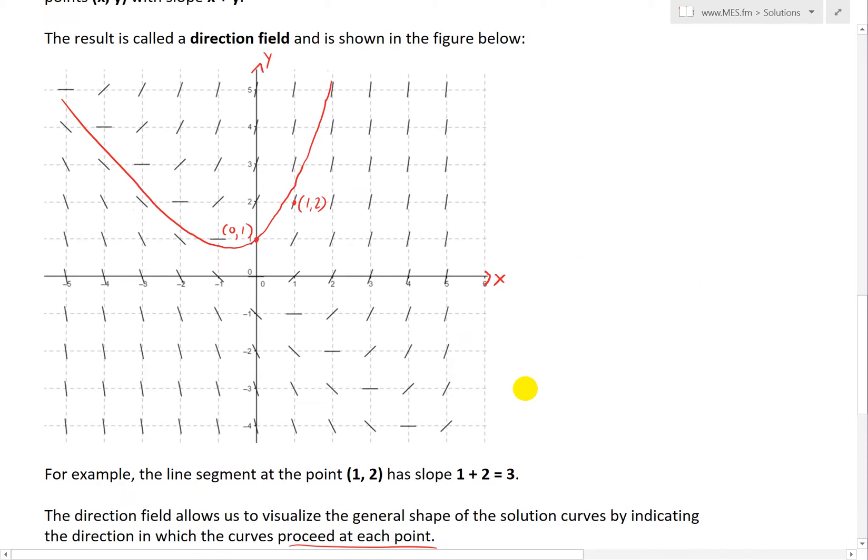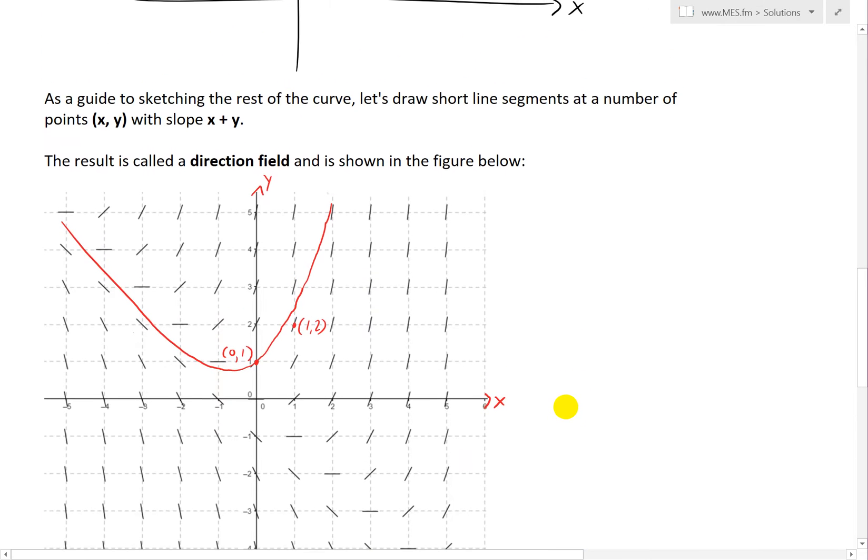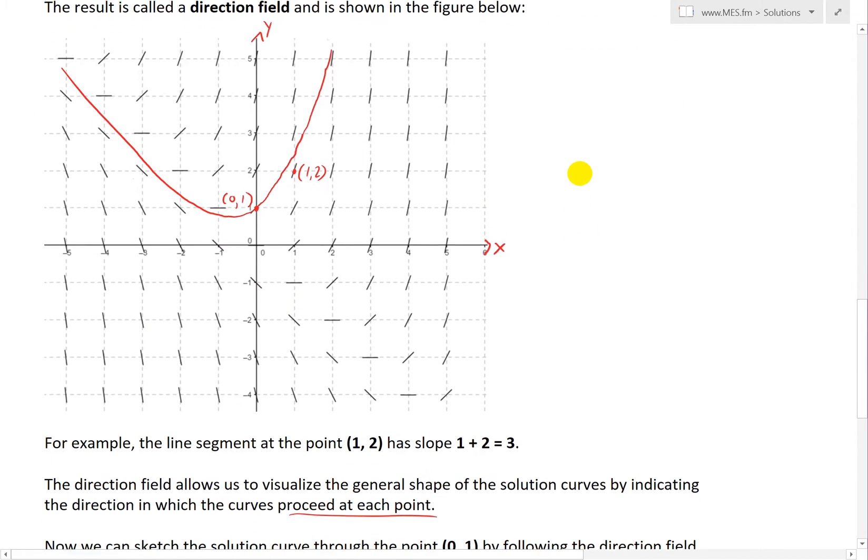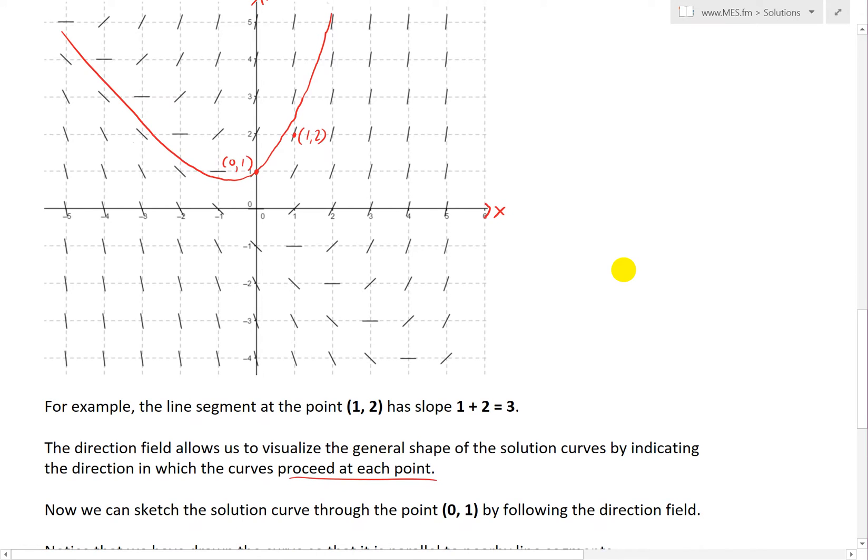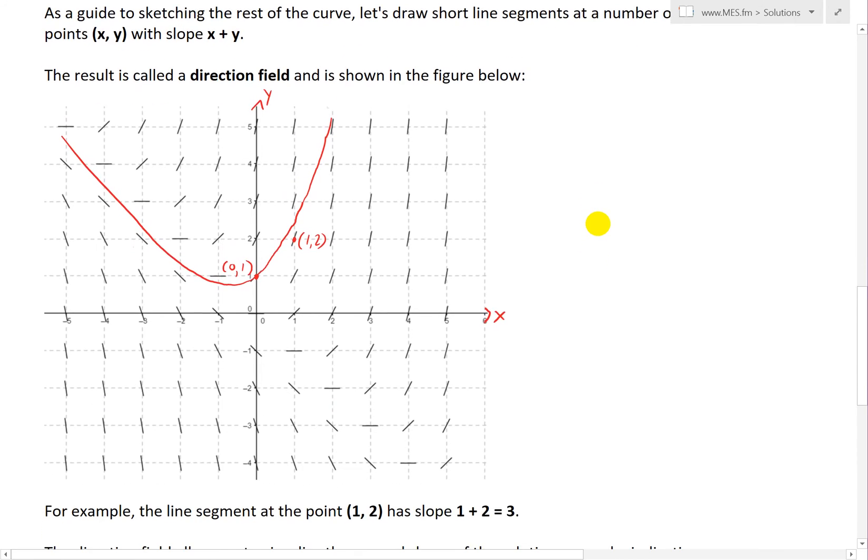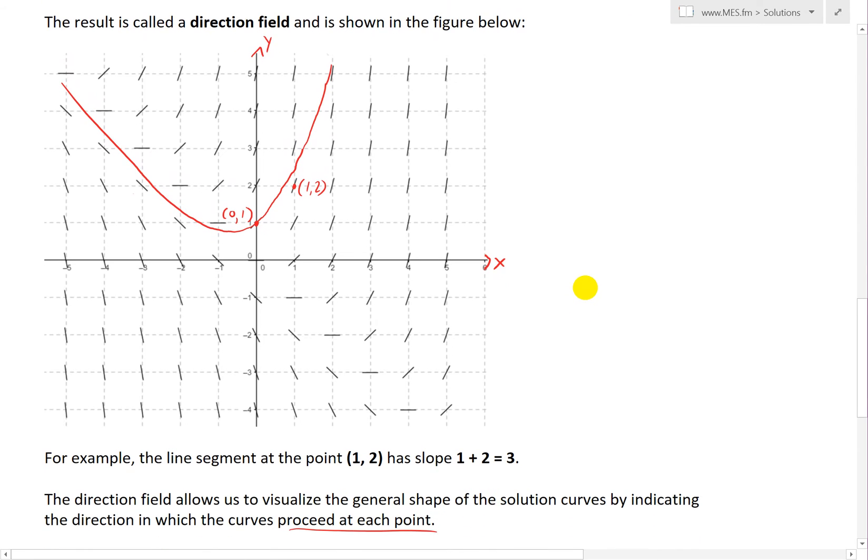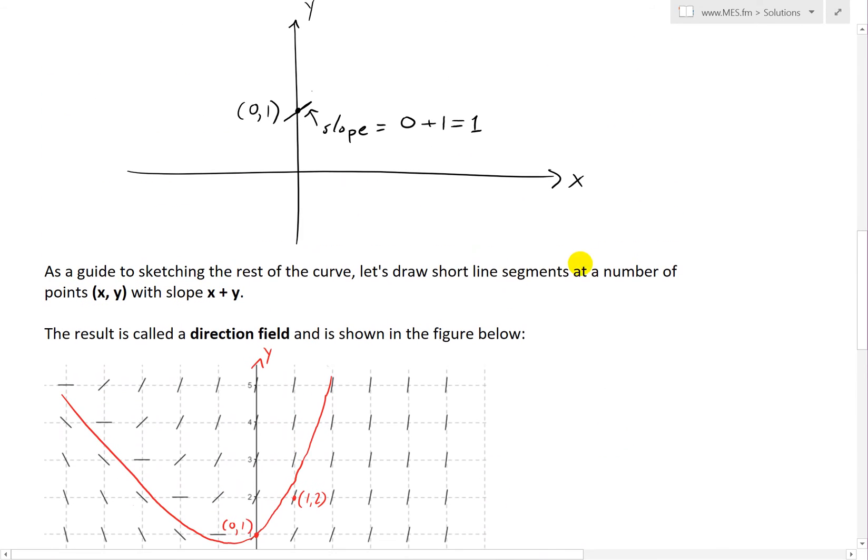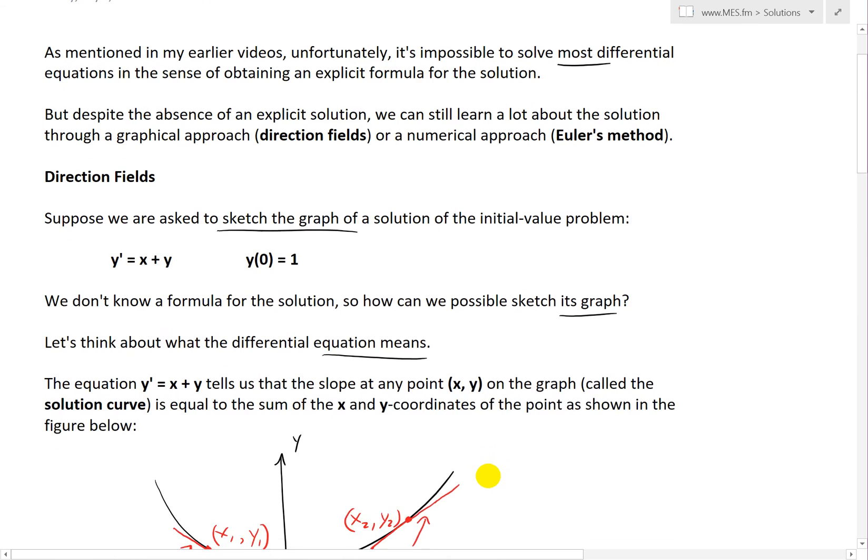This direction field is generated by the computer because it's quicker. This will foreshadow later videos that will show that most of the world's supercomputers are actually used to solve differential equations numerically or graphically plot them out. A lot of the supercomputers are used in stuff like this. This is just a very basic visualization, but as you get more advanced, the equations get more complex, so you're going to need faster and faster computers.